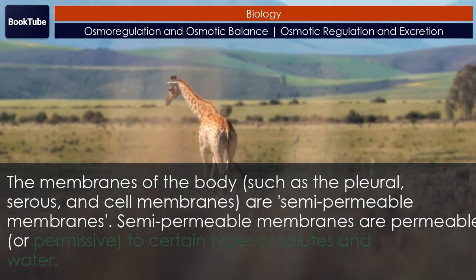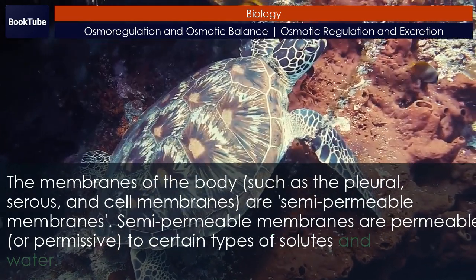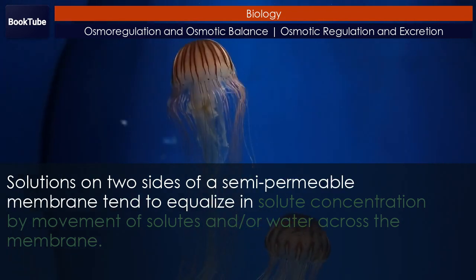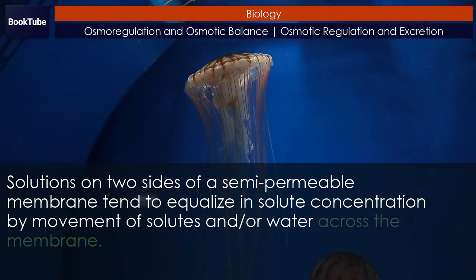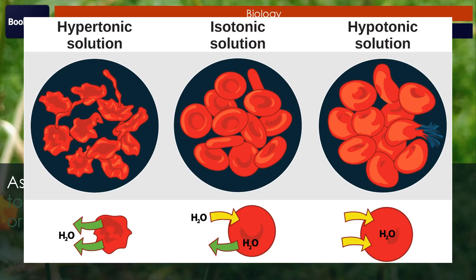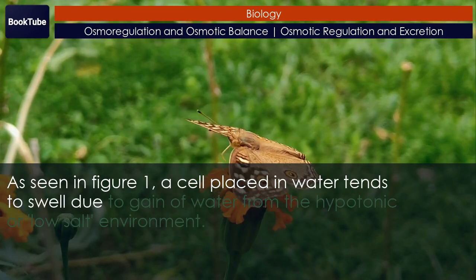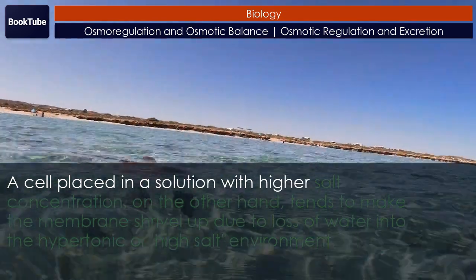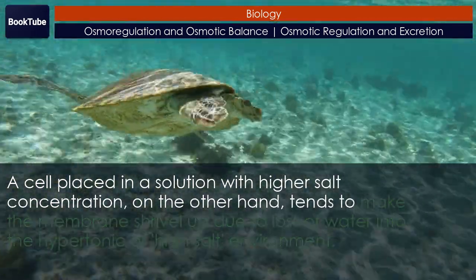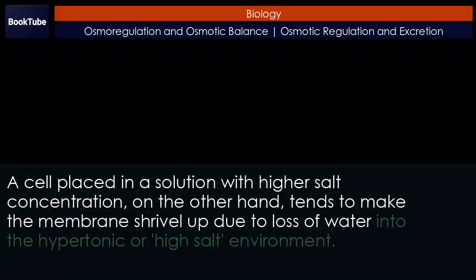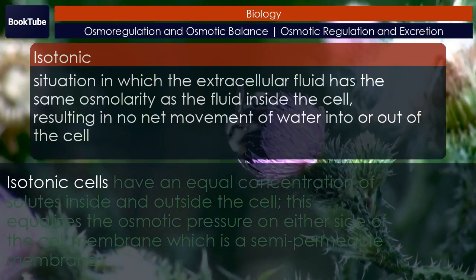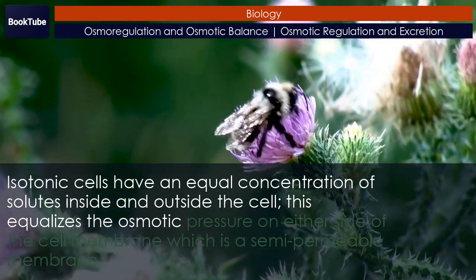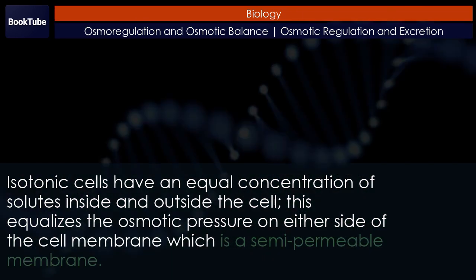Semi-permeable membranes are permeable to certain types of solutes and water. Solutions on two sides of a semi-permeable membrane tend to equalize in solute concentration by movement of solutes and/or water across the membrane. As seen in Figure 1, a cell placed in water tends to swell due to gain of water from the hypotonic or low-salt environment. A cell placed in a solution with higher salt concentration tends to make the membrane shrivel up due to loss of water into the hypertonic or high-salt environment. Isotonic cells have an equal concentration of solutes inside and outside the cell, equalizing the osmotic pressure on either side of the cell membrane.